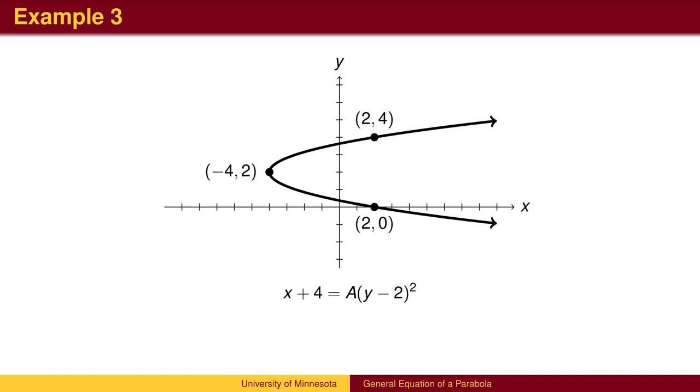We can also find the stretch factor as we did in example 1. From the vertex with y-coordinate 2, we go up to 4, a distance of 2. The standard x equals y squared parabola moves 2 from the vertex and right 4. We expect to go right 4 to the point (0,4). Instead, we went further to the point (2,4), a distance of 6. The standard is 4, we went 6, so the stretch factor is 6 over 4, or 3 halves. The equation of this parabola is x plus 4 equals 3 halves times (y minus 2) squared.